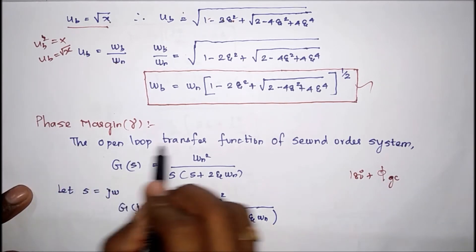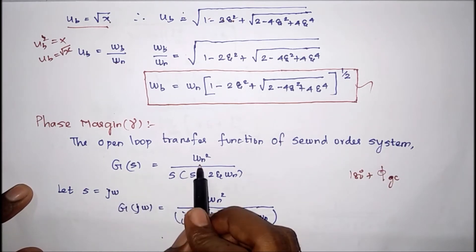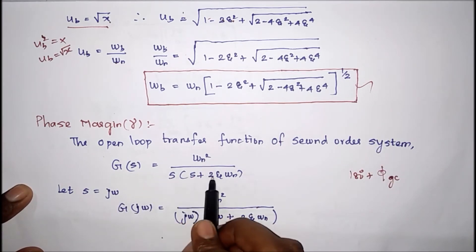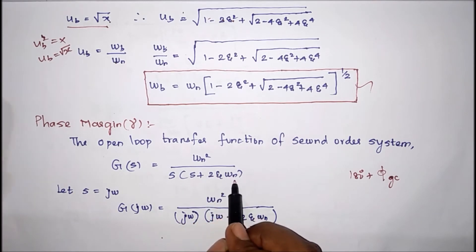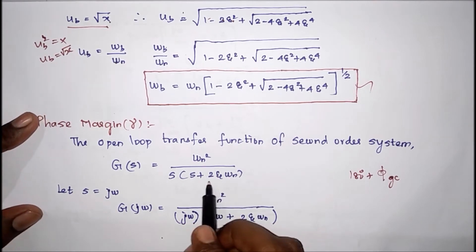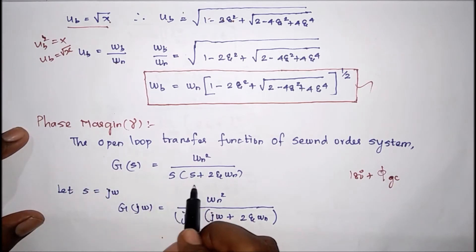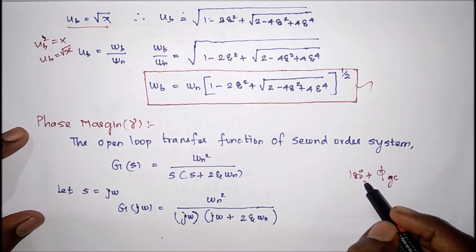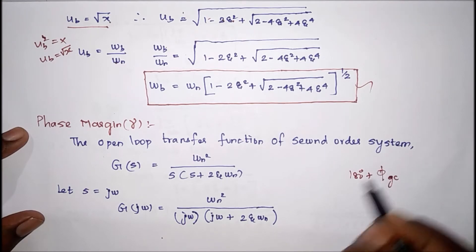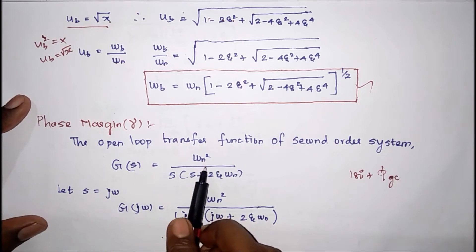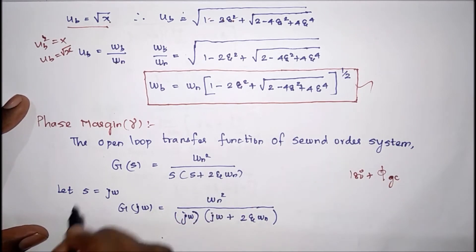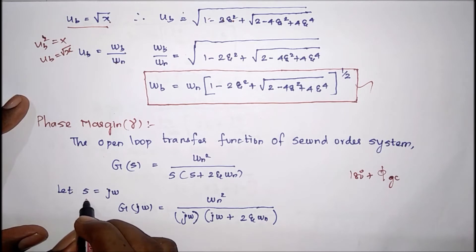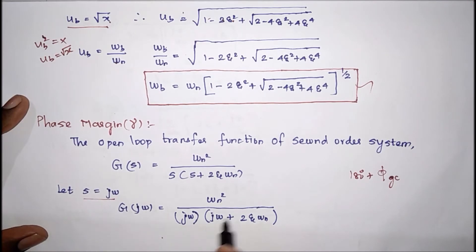We know the open loop transfer function of a second order system: G(s) = ωn² divided by s(s + 2ζωn). For phase margin we consider the open loop system, because we are going to add φgc with 180 degrees to bring the unstable system to stable. According to the frequency domain specification, we substitute s = jω.